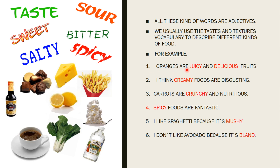Number one: Oranges are a juicy and delicious fruit. In this case we use two kinds of textures. Number two: I think creamy foods are disgusting. Number three: Carrots are crunchy and nutritious. Number four: Spicy foods are fantastic. Number five: I like spaghetti because it's mushy. Number six: I don't like avocado because it's bland.